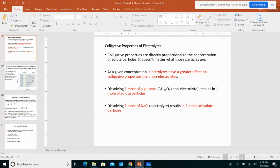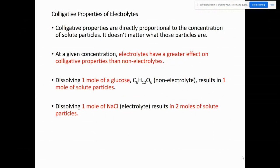We started talking about colligative properties. Colligative properties are properties that depend on the number of solute particles dissolved in the solvent, not the type of solute particles. Some colligative properties I started talking about yesterday include lowering of vapor pressure. The other three I'm going to cover are freezing point depression, boiling point elevation, and osmotic pressure.